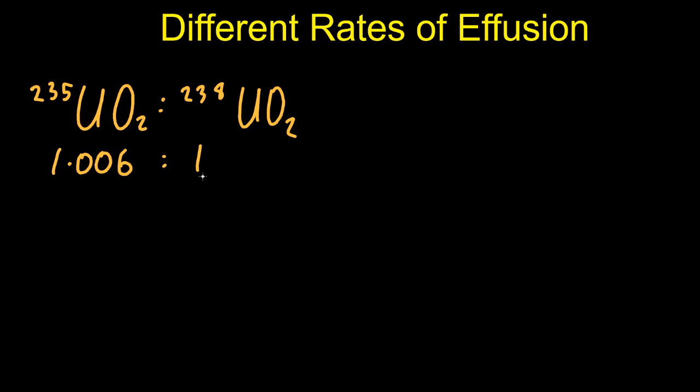Why not use effusion to separate out the oxides? Well, for every one meter the 238 uranium goes, the 235 goes one meter and six millimeters. That's not a great difference, is it? So effusion is going to be quite tedious using the oxide. What about using the metal itself? Well, it's exactly the same ratio.